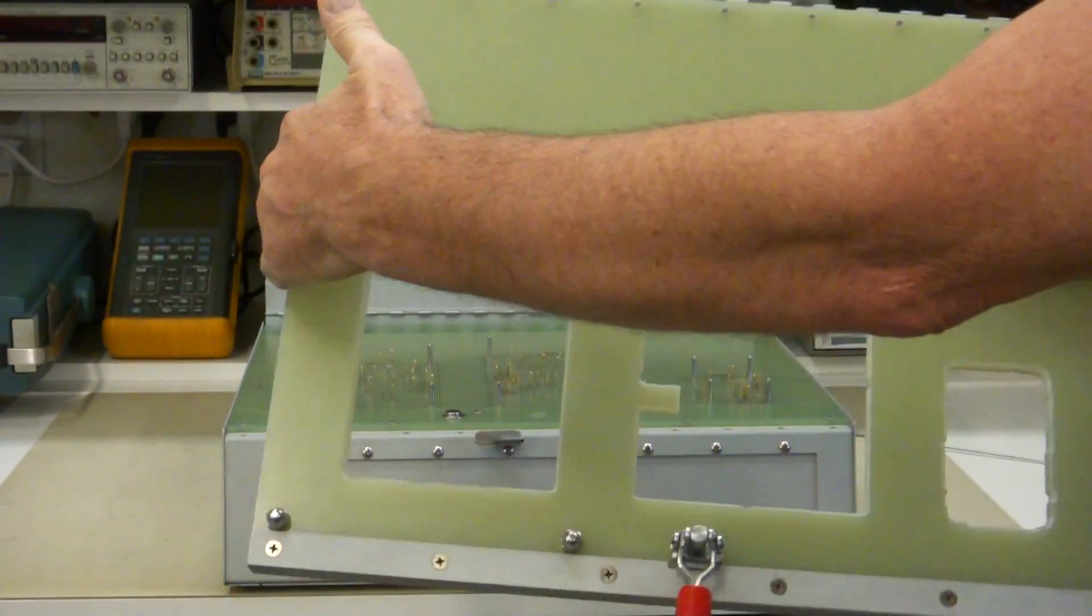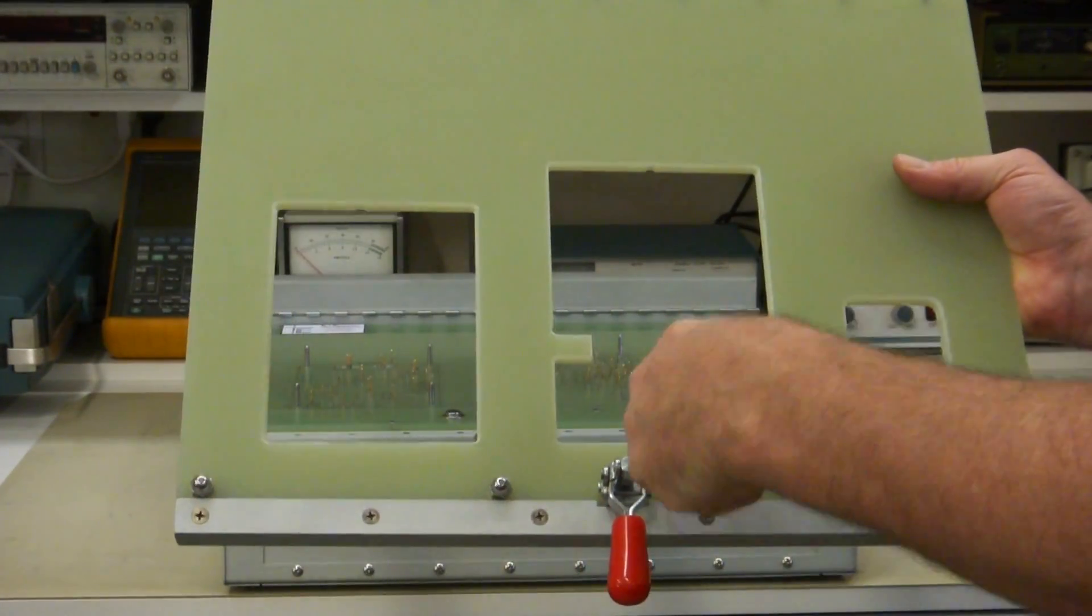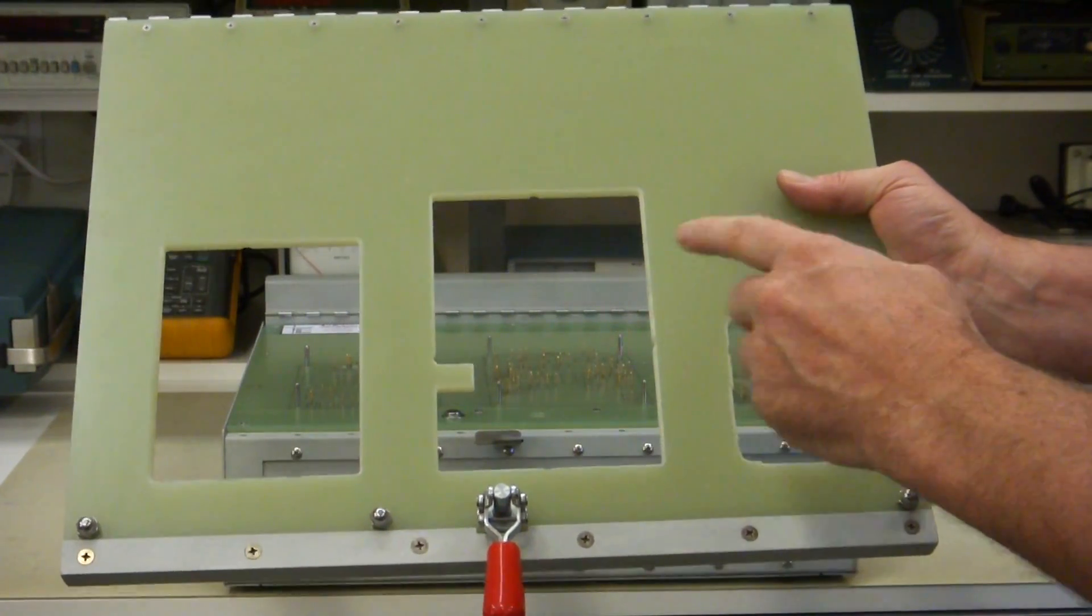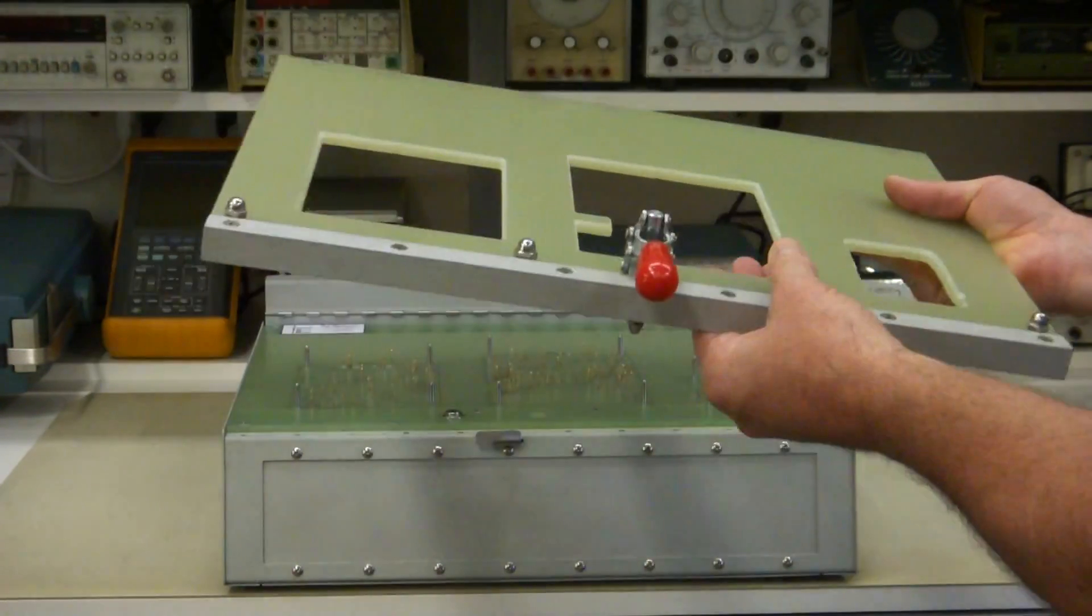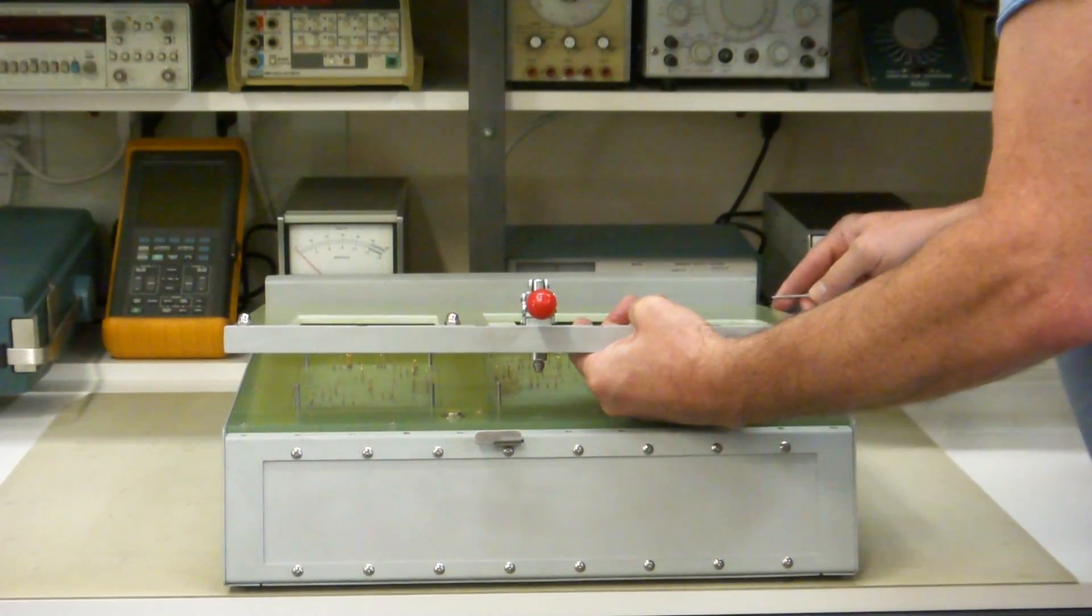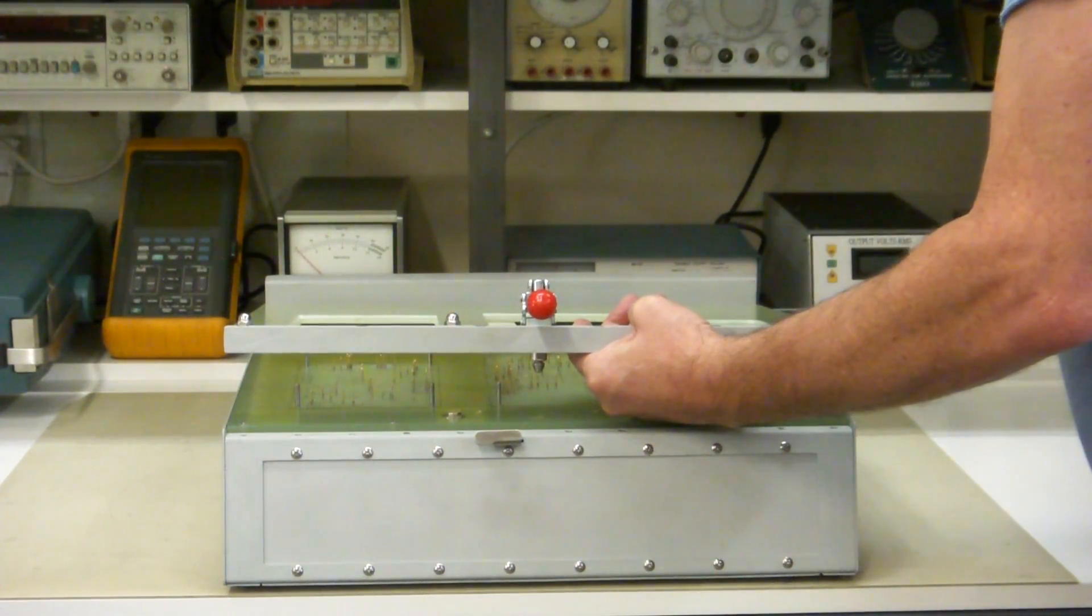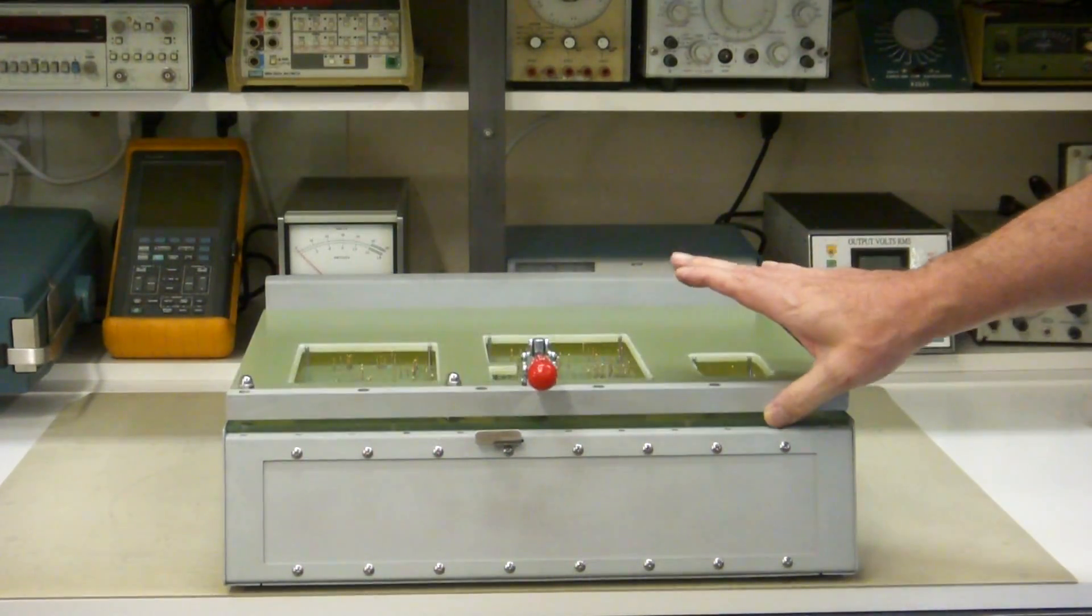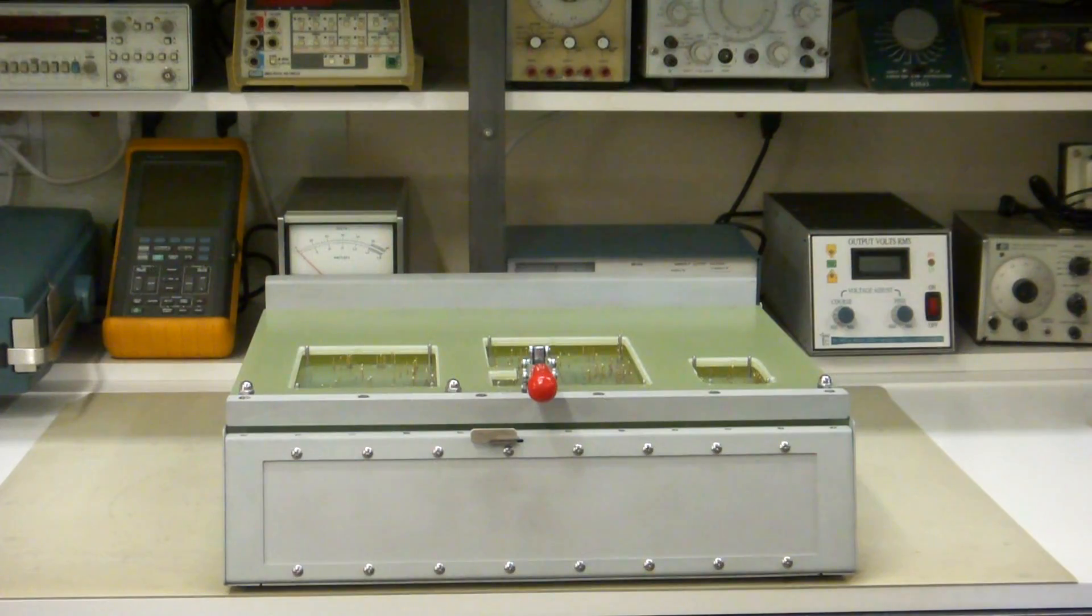Just pull out this hinge pin just like that and it comes right out. Now you can put this in a mill and route out all these, machine out all these edges, parts that you might have bigger. And then all you do is you put it right back in, put your hinge pin straight through, and you're back working again. It's that easy to take the press plate out and modify it.